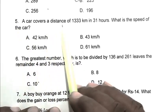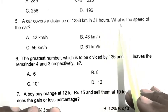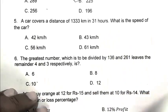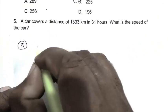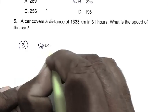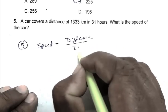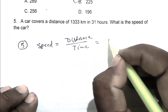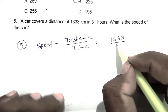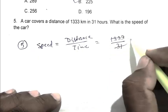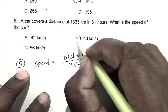Question number five: A car covers a distance of 1333 kilometers in 31 hours. What is the speed of the car? We know that speed is distance by time. Distance is 1333 and time is 31 hours. We divide it and get 43. So B is the right answer.